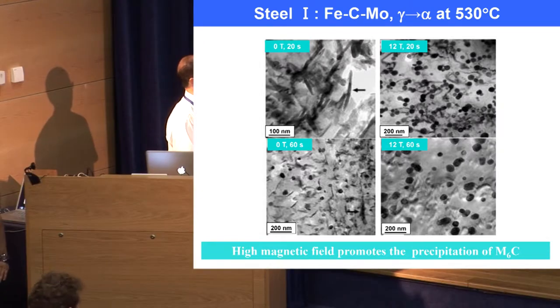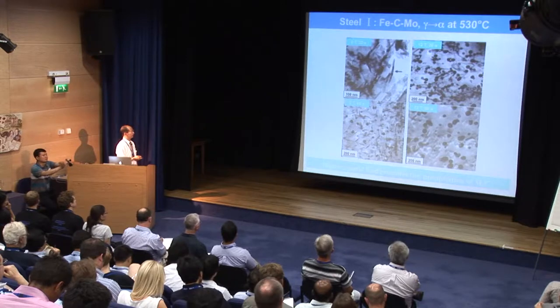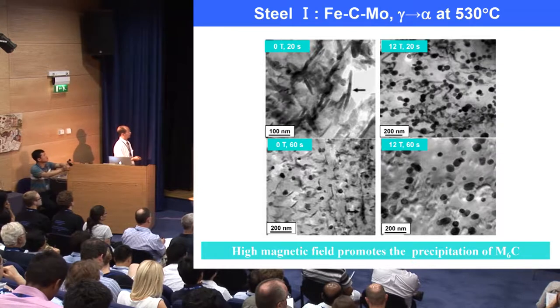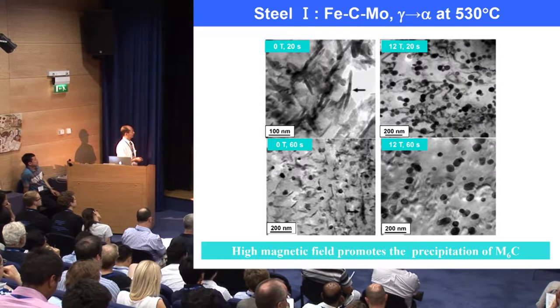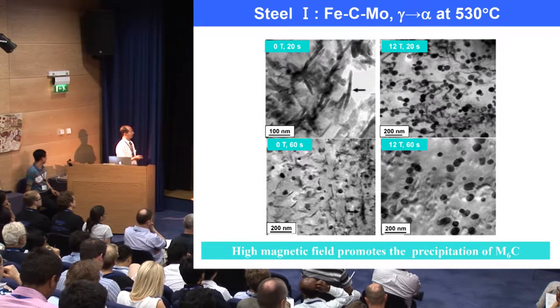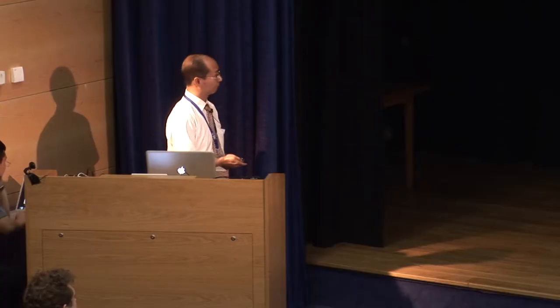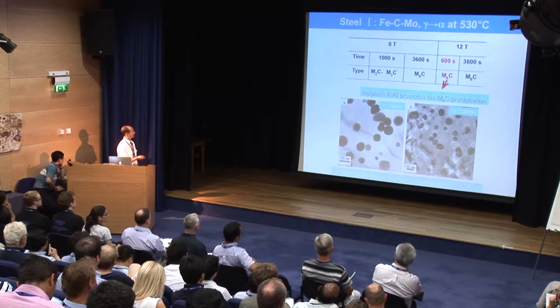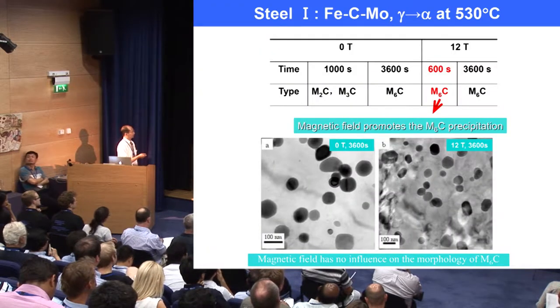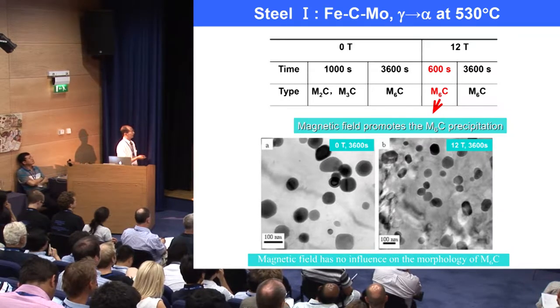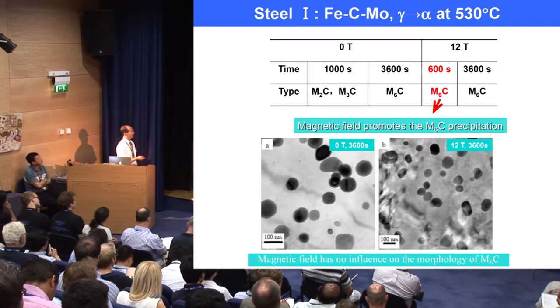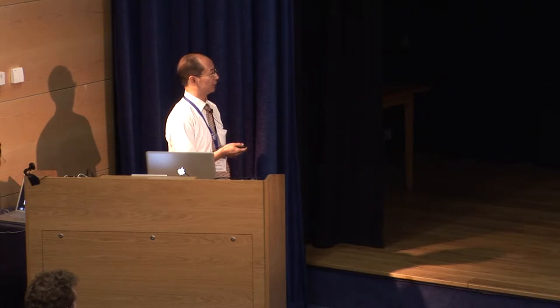What happens if a high magnetic field is applied during phase transformation from austenite to bainite — that is, degenerate ferrite at an isothermal temperature? From this image, we can see that at the austenoid stage, cementite and M3C carbide are precipitated in the conventional heat treatment. However, when a high magnetic field is applied, M6C is precipitated in the specimen. With the increase of isothermal holding time, in the conventional heat treatment M6C is only precipitated at a long holding time, but in the high magnetic field, at a short holding time, M6C is promoted. It is clear that M6C is precipitated both at an early and a later stage of this heat treatment.